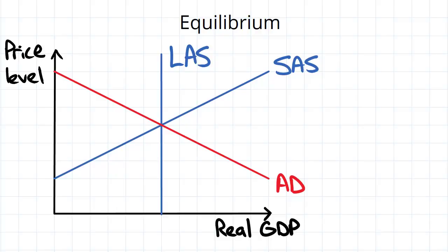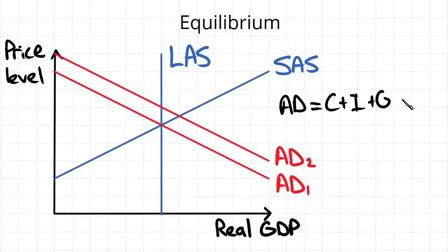So let us see specifically what happens when aggregate demand increases from aggregate demand one to aggregate demand two. And remember that our aggregate demand is equal to consumption plus investment plus government spending plus net exports, and these could all potentially increase for a variety of reasons.